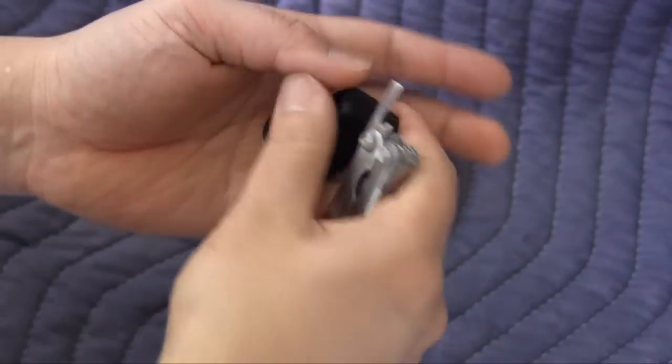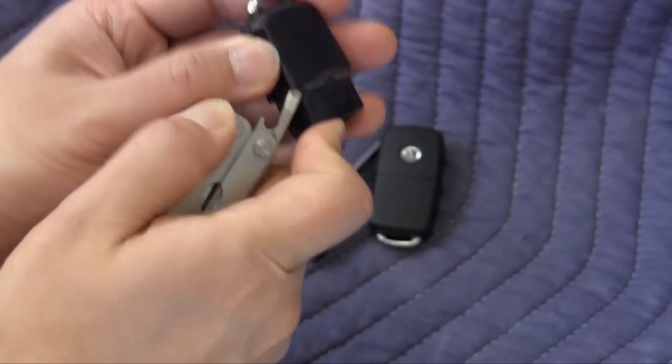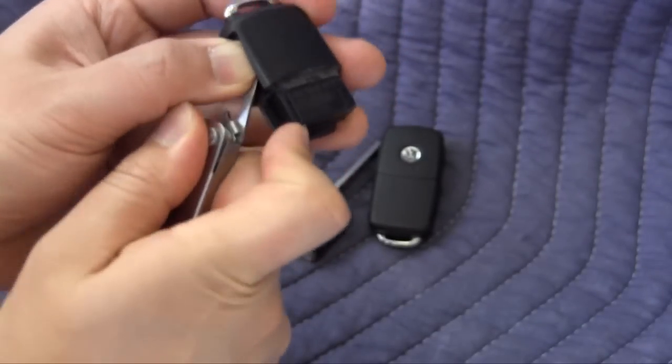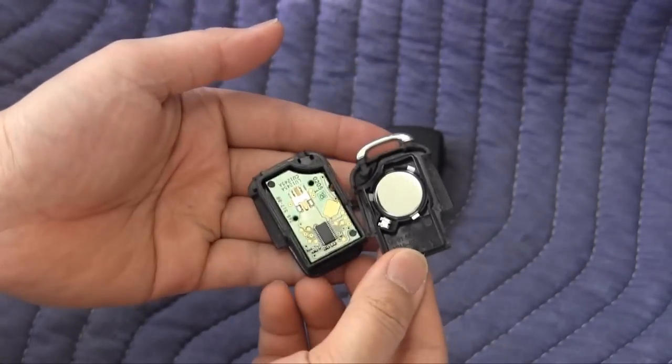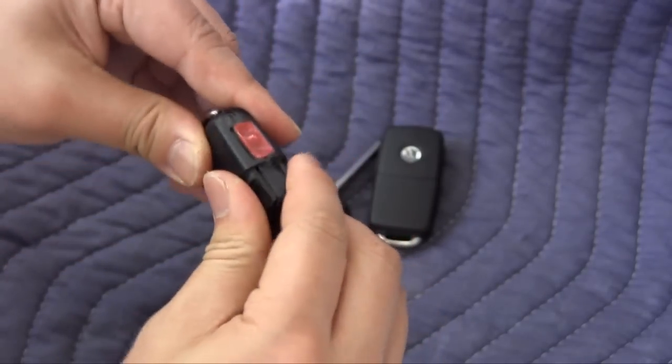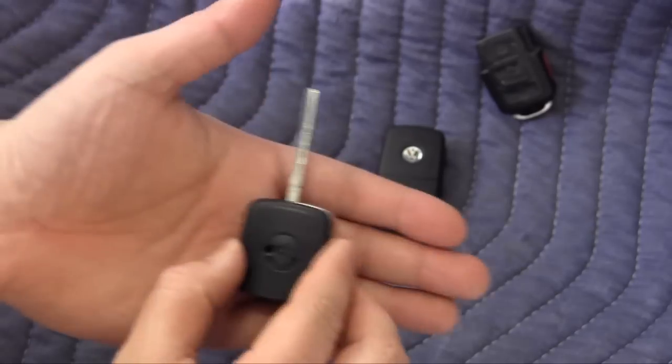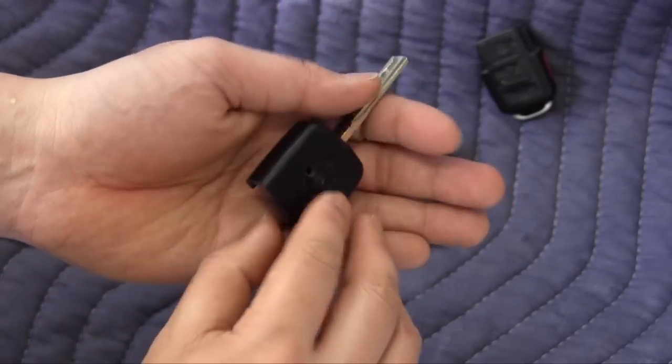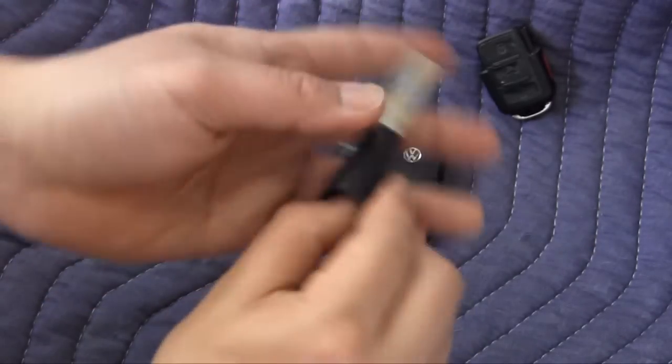Now on the side opposite the buttons, there's a small seam where you can insert a small pry. Pry the two halves apart. If you want to replace the remote half, there you go. Now this key half is held together with that one screw. Now that that screw is removed, you can just gently pry these two halves apart.